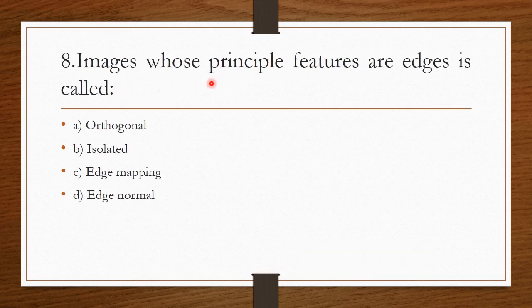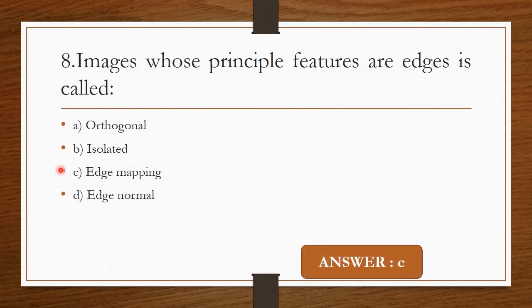Question 7: Images whose principal features are edges is called — Option A: Orthogonal. Option B: Isolated. Option C: Edge mapping. Option D: Edge normal. The correct answer is Option C — Edge mapping.